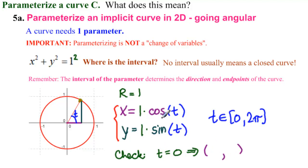x is 1 times cosine of 0, which is 1. And y is 1 times sine of 0, which is 0. Where is that point? Right here. So that's our starting point.